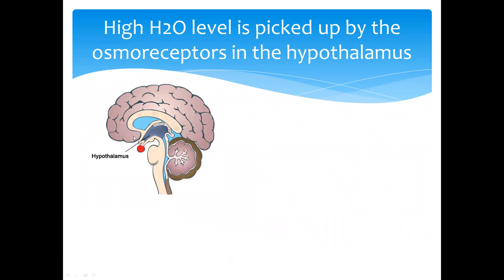This increase is picked up by the hypothalamus of the brain, and it responds by sending impulses to the pituitary gland. The pituitary gland will then secrete less ADH.